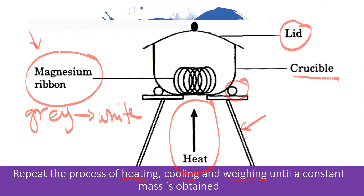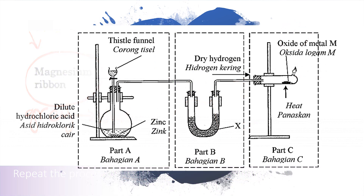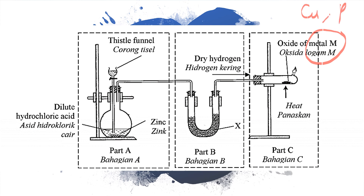This is the experiment to determine the empirical formula for reactive metal, for example magnesium. The second method is to determine the empirical formula for less reactive metal — maybe copper or lead.